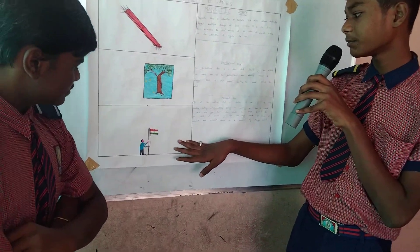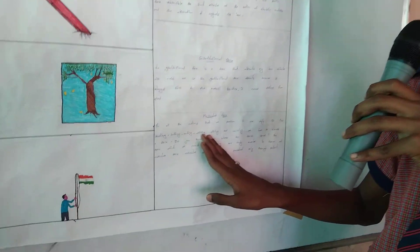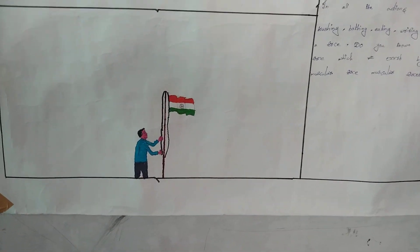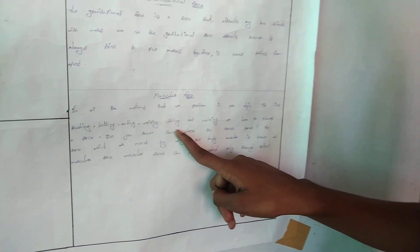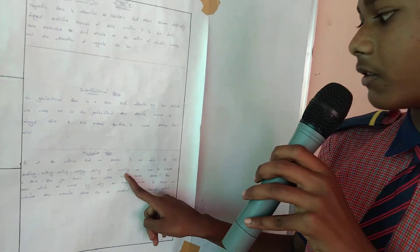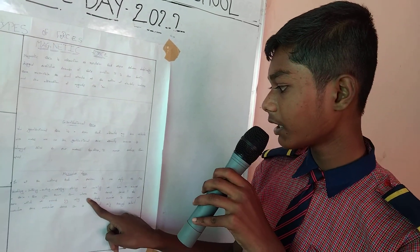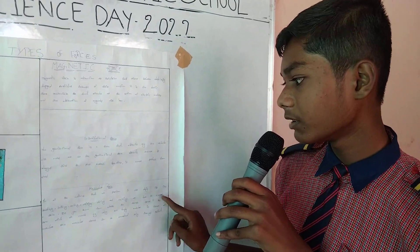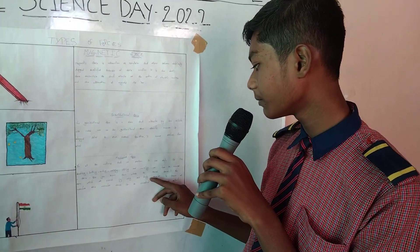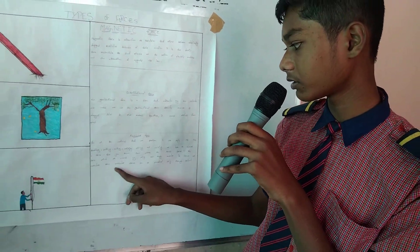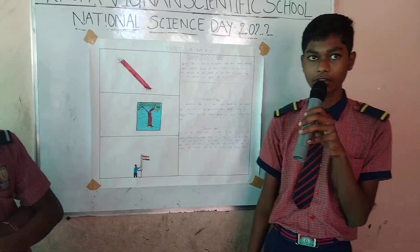The last force is muscular force. In all the actions that we perform in our daily life — like brushing, bathing, writing, eating, driving, and walking — we have to exert a force. Do you know where these forces come from? The force which we exert by using our body muscles is known as muscular force. Muscular force can be exerted only through contact. Thank you.